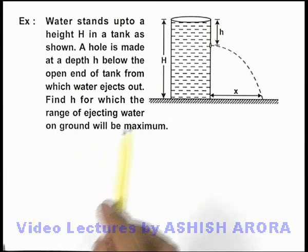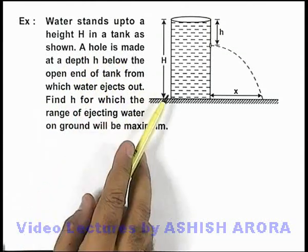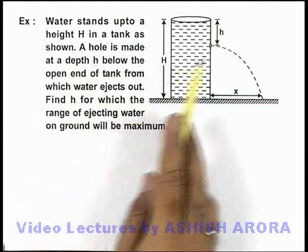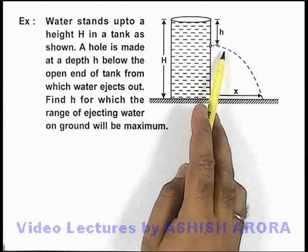In this example, we are given that water stands up to a height H in a tank, as shown here. A hole is made at a depth small h below the open end of the tank, from which water ejects out.